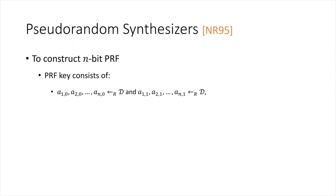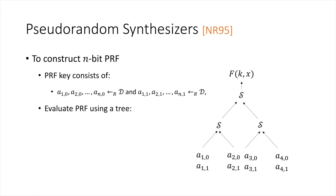We define the PRF evaluation on an input X using a tree structure. Each leaf of the tree is associated with a pair of key elements corresponding to each bit of the PRF input. The first leaf position is associated with A_{1,0} and A_{1,1}; the second with A_{2,0} and A_{2,1}; and so on.